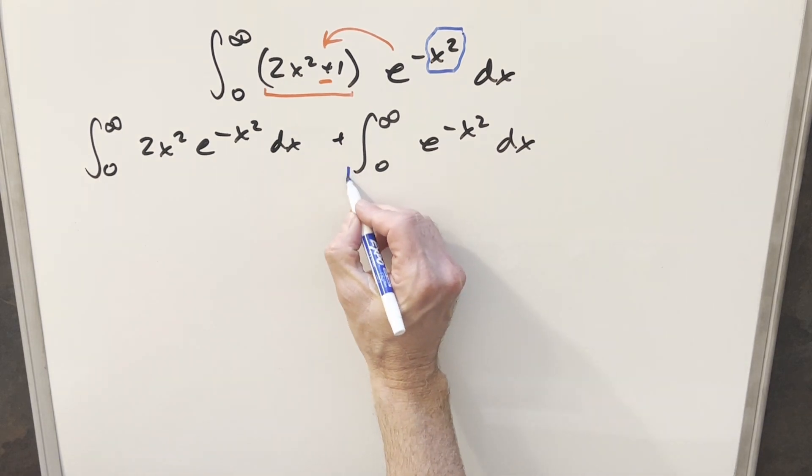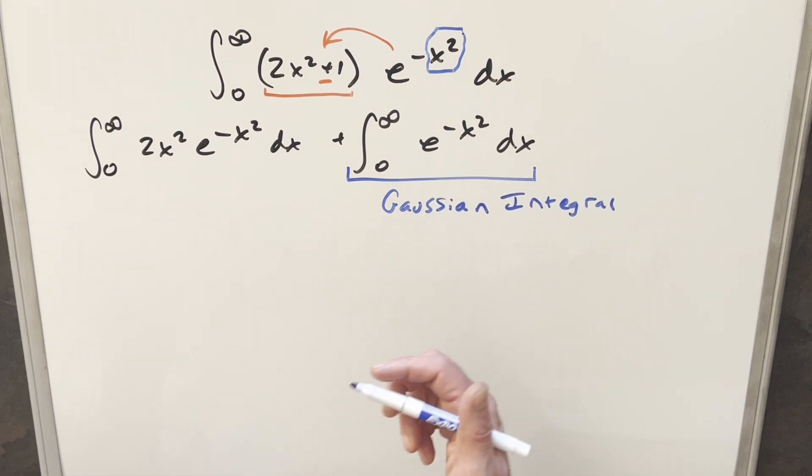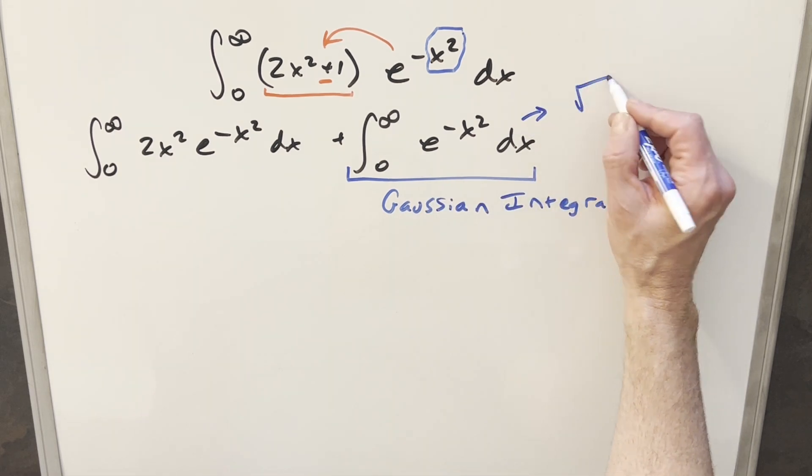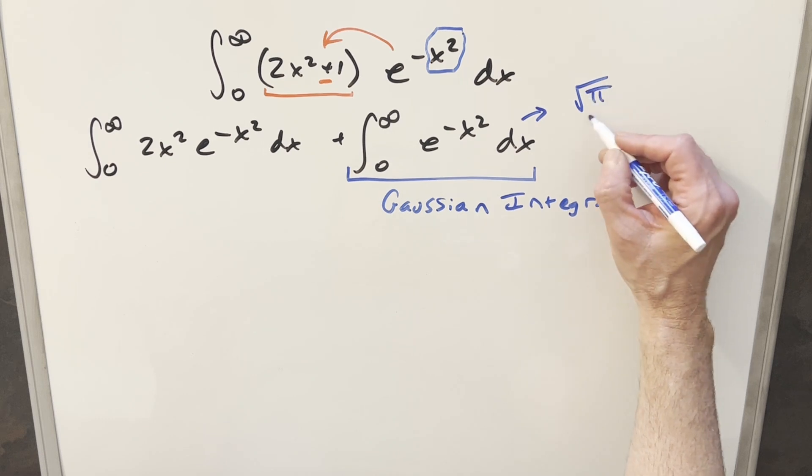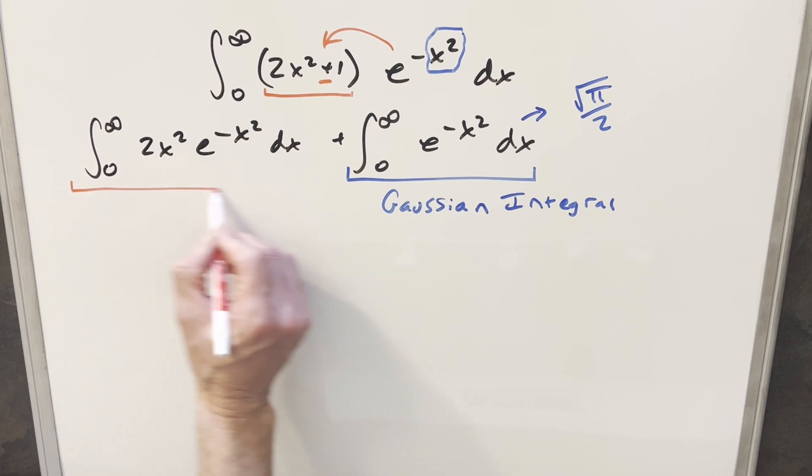But this right here on the right, this is actually just the Gaussian integral. And what we do for this typically is we're just going to remember a value for this. This thing is actually going to be equal to square root of pi over 2. So knowing this part, we really can just focus on our first integral.